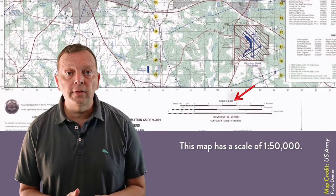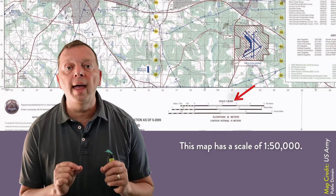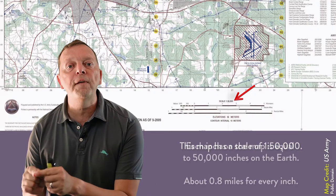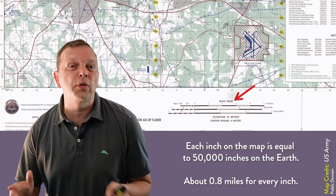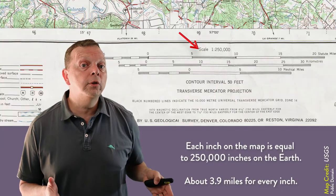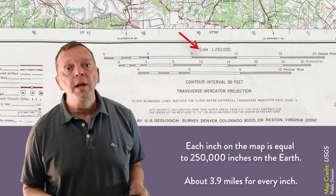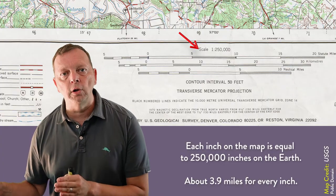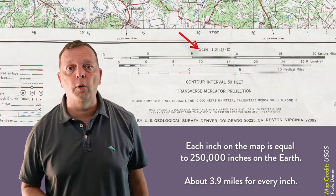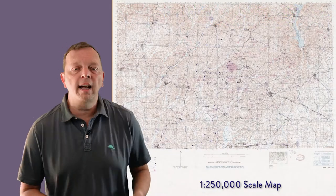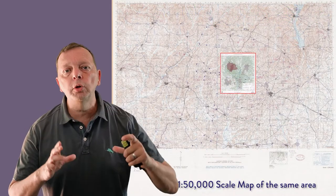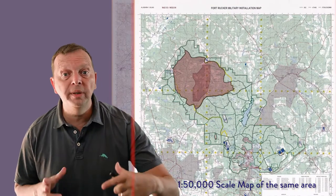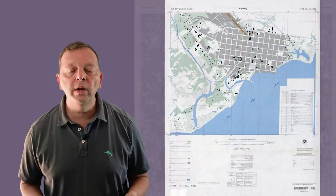For example, a one to 50,000 scale map means that for every inch on the map is worth 50,000 inches on the earth. That's about three quarters of a mile. We can compare that to a one to 250,000 scale map, which means that the same inch on the map is now worth five times as long on the earth, which is just less than four miles. But what this really means is that a one to 50,000 map is able to show you much more details. It's almost like it's been zoomed in like a magnifying glass.